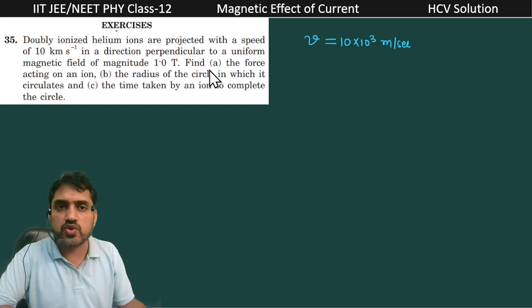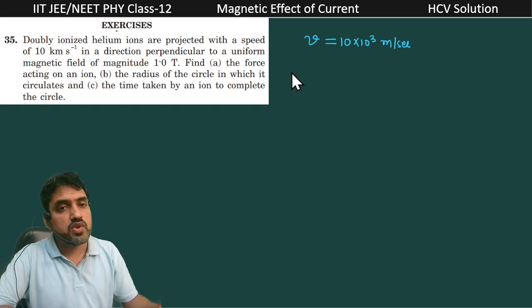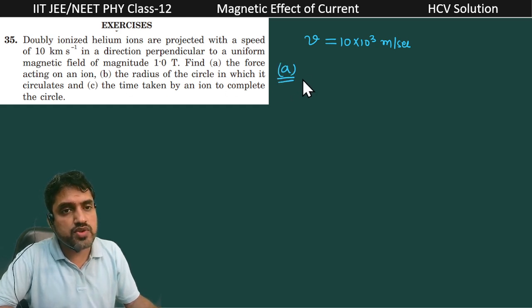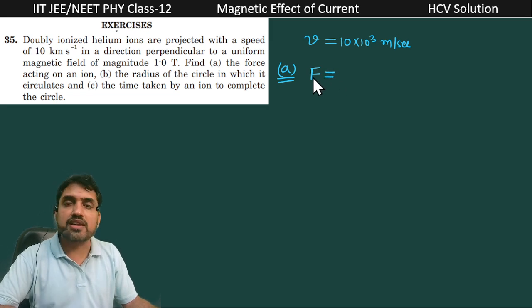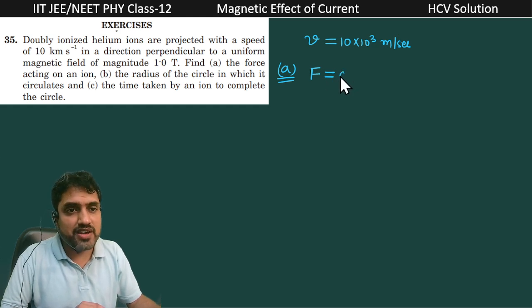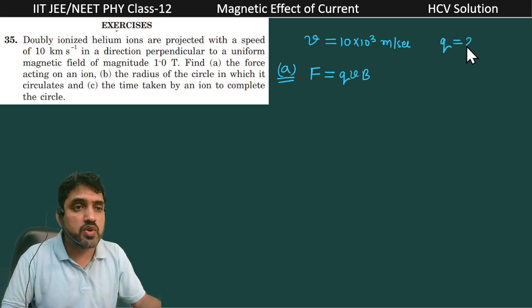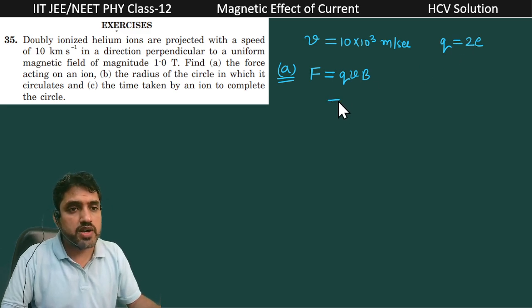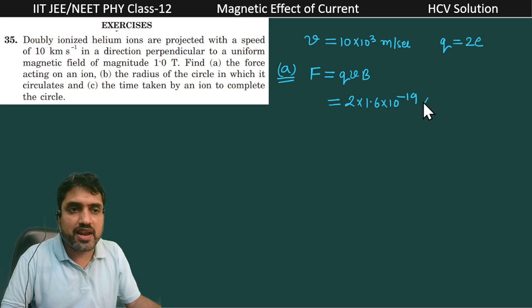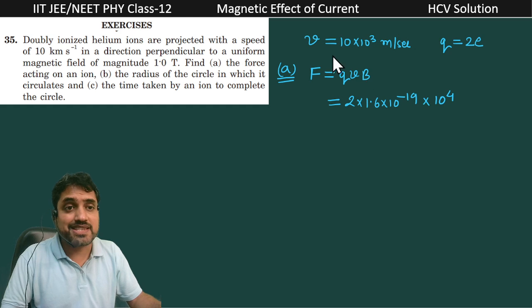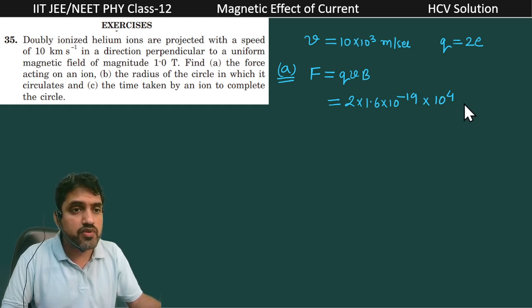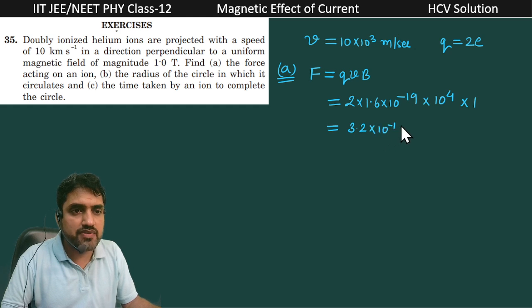The first part of the question is to find the force acting on an ion. Whenever a charged particle is moving in a perpendicular magnetic field, the force will be QVB. If we are talking about the charge on the doubly ionized helium ion, Q is equal to 2 into e, so it will become 2 into 1.6 into 10 raised to power minus 19, and the velocity is 10 raised to power 4, and the magnetic field is 1. So finally we are getting 3.2 into 10 raised to power minus 15 Newton.